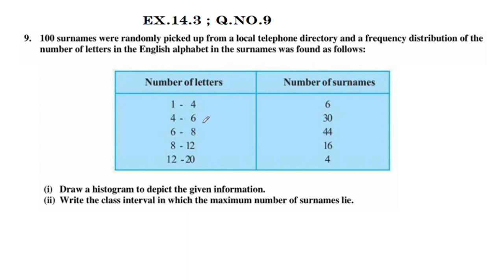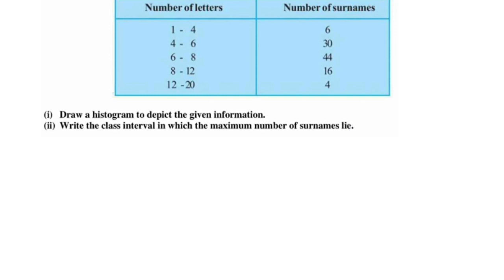If we have a histogram, we have a bar in a rectangle shape and the area is proportional to the frequency. Now we have to modify this table — we adjust the frequency and the area of the rectangle in the histogram.